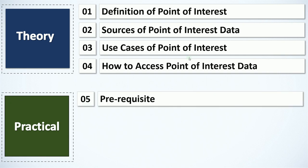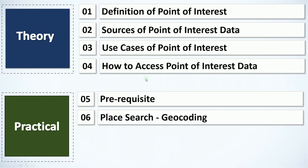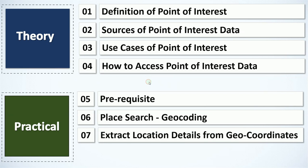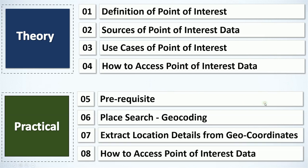Under the practical aspect, we look at the prerequisites. When we get to Jupyter Notebook you will learn more about that — how to do place search, which covers geocoding and the opposite, which is extracting location details from coordinates — reverse geocoding — and how to access Point of Interest data.